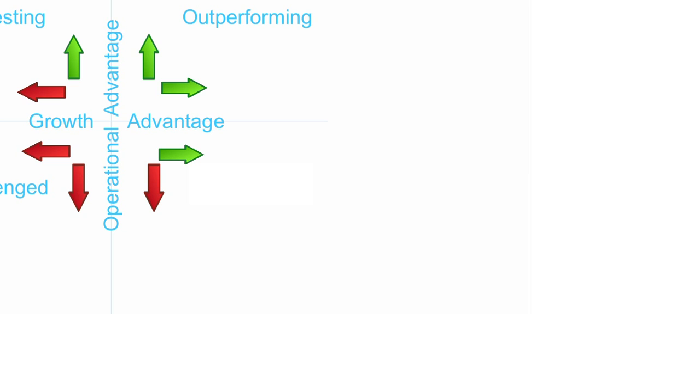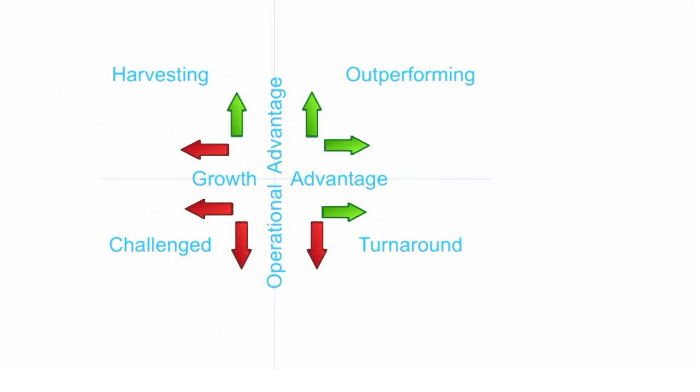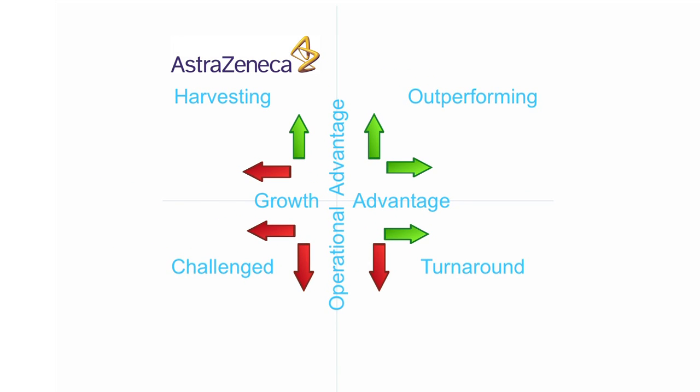The bottom left quadrant consists of companies with low operating advantage and low growth advantage; we classify these as challenged — relative to their competitors, they are challenged operationally as well as struggling to grow their business. The bottom right quadrant consists of companies with low operating advantage but high growth advantage; we classify these as turnaround — while the companies are not doing as well operationally, the market is valuing them highly and expecting a turnaround. Looking at AstraZeneca and its competition, we can see that AstraZeneca is a harvester, while Noble is an outperformer.